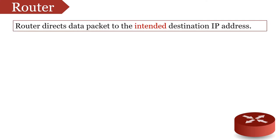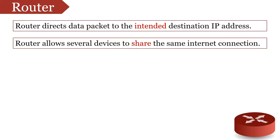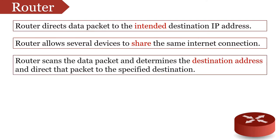Two main responsibilities of a router are forwarding the data packet to an intended IP address and allowing several devices to share the same internet connection. Every data packet has some information in its header, like sender and receiver's MAC address, sender and receiver's IP address, type and size of data, etc. The router scans the data packet, determines the receiver's IP address, and then chooses the best route for the data packet to reach its destination.